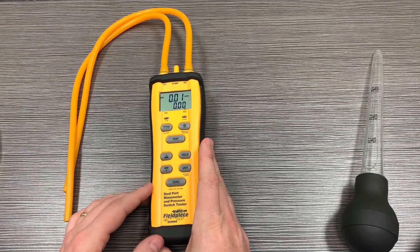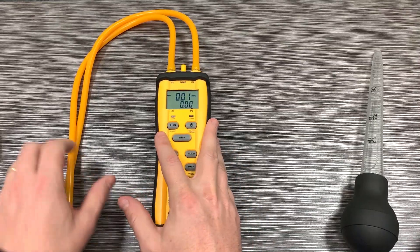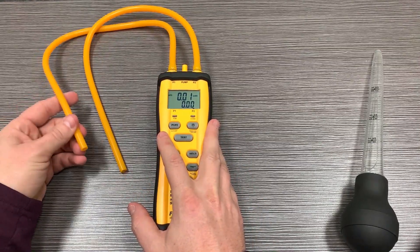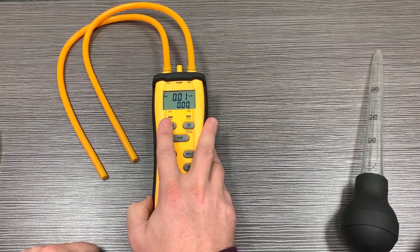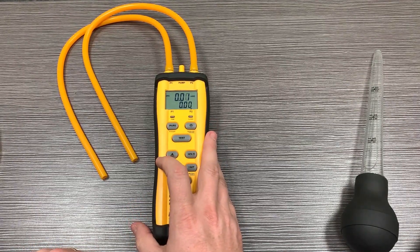If you're measuring pressure on a gas valve, you would want to be toggling. If you take one and hook it on your inlet to your gas valve and the other to your outlet or manifold pressure, you're going to want to toggle back and forth between P1 and P2 to see what those are.